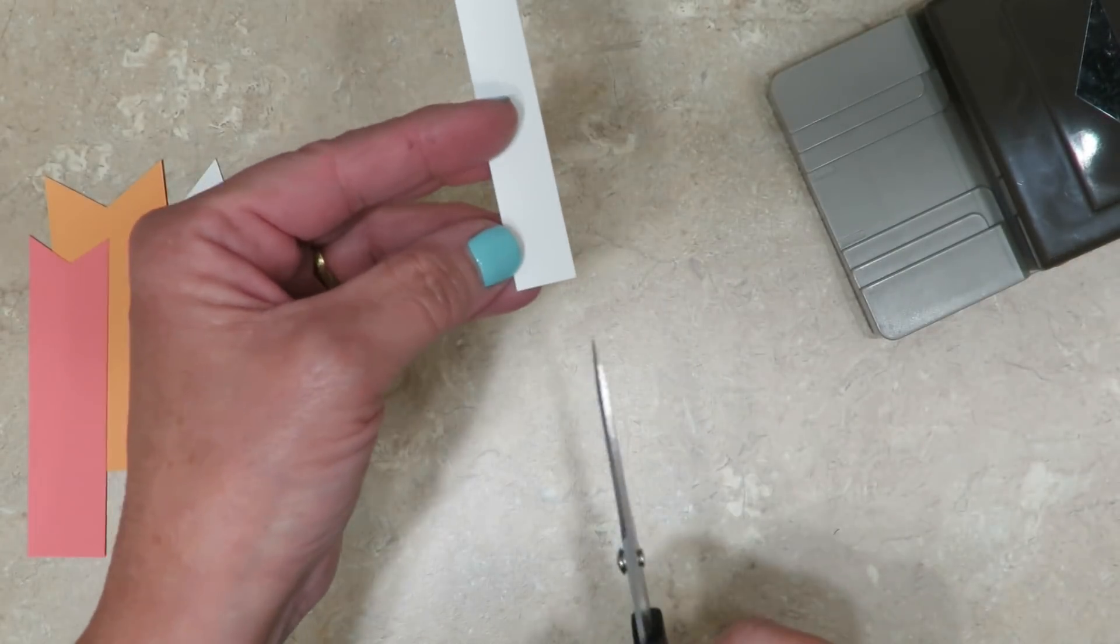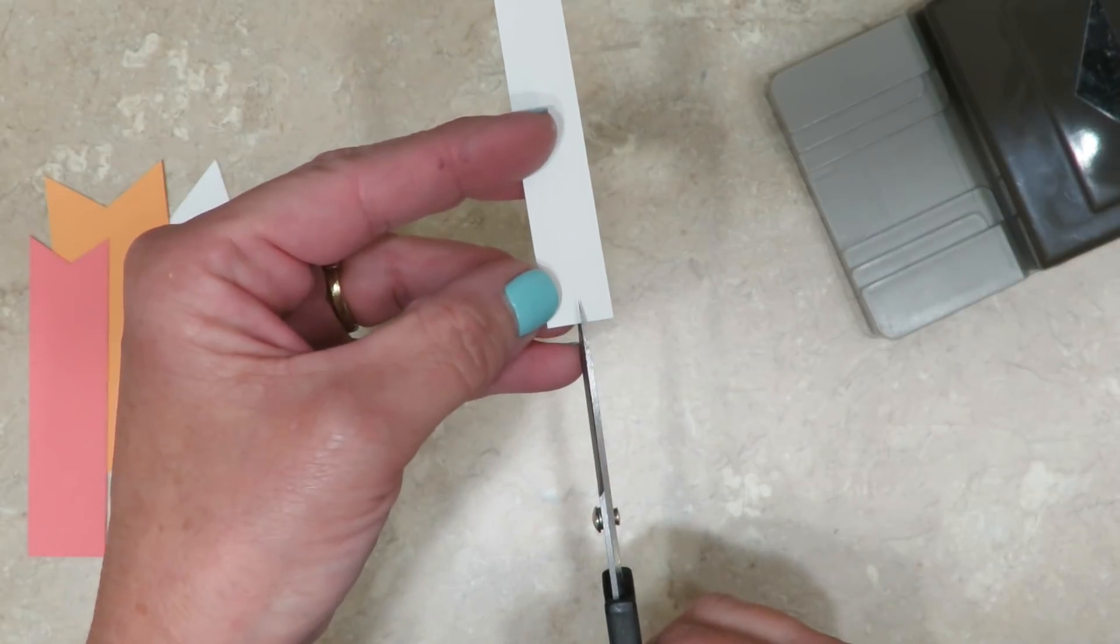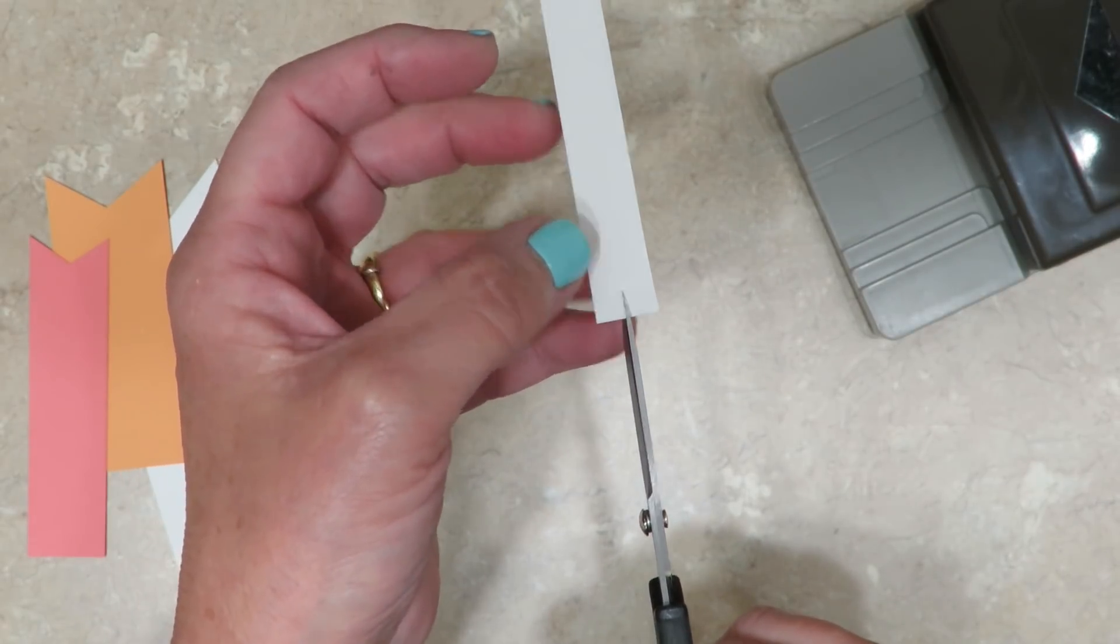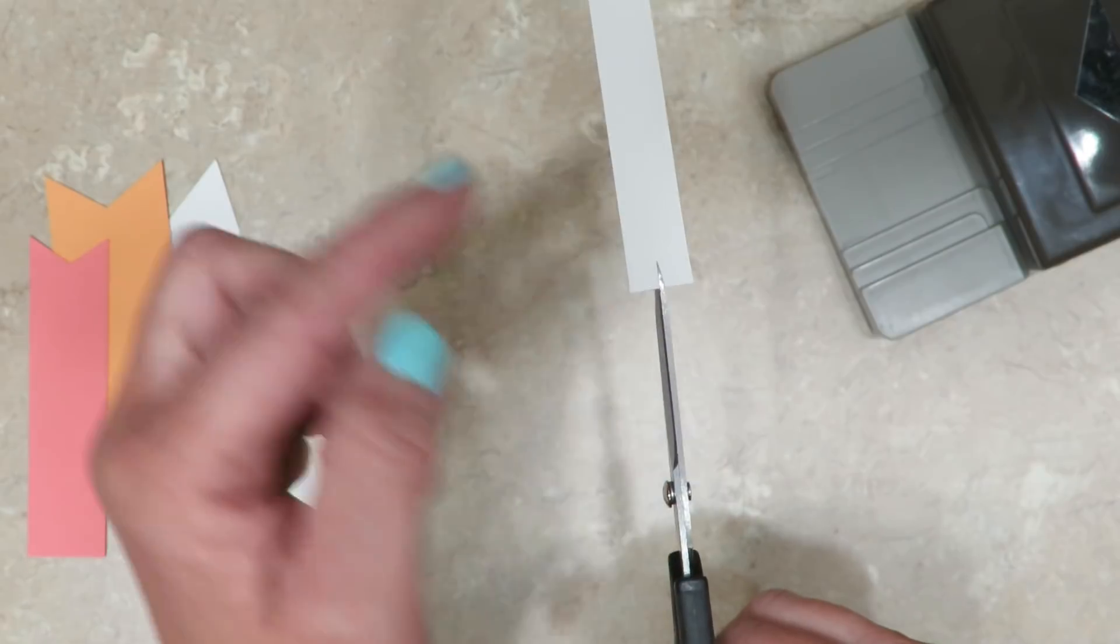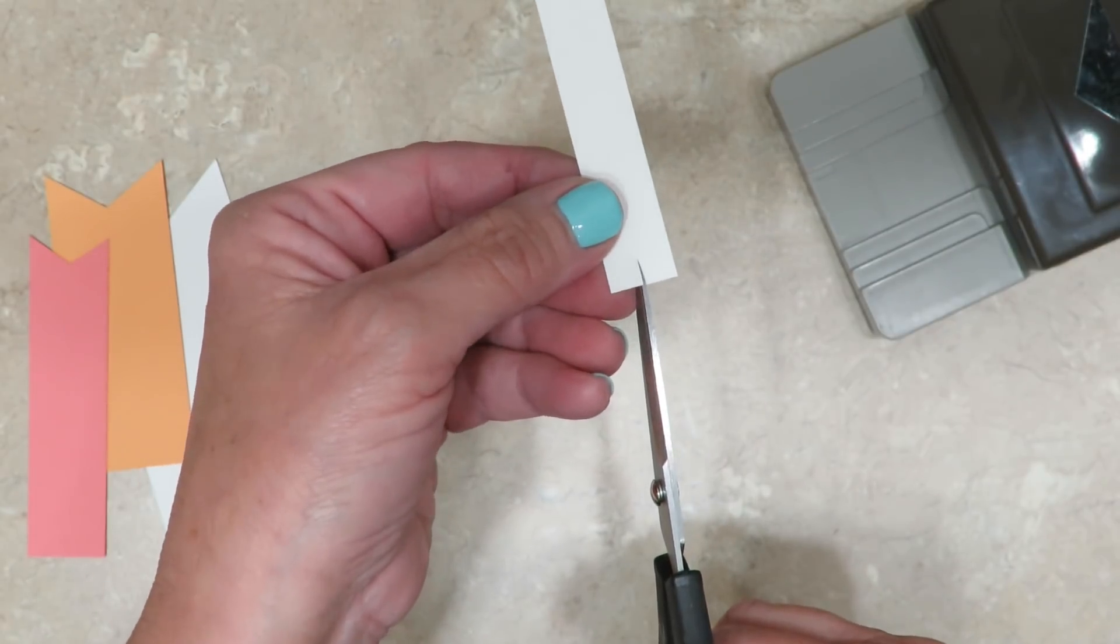You're going to take your scissors and the very first thing you're going to do is create a slit. If you make the slit very deep, you're going to have wider tips. If you make it shallow like I have here...